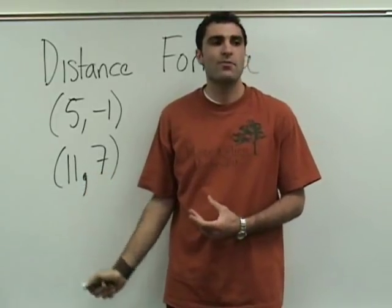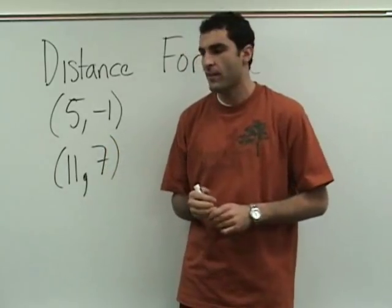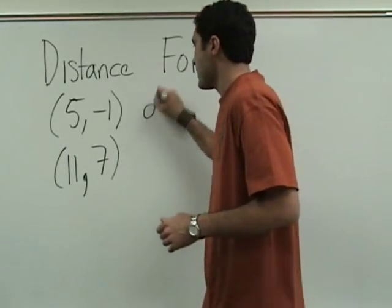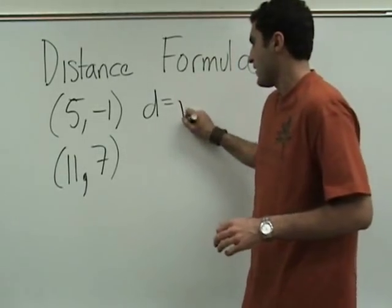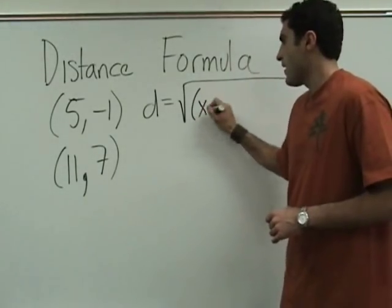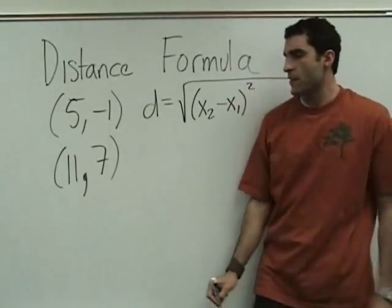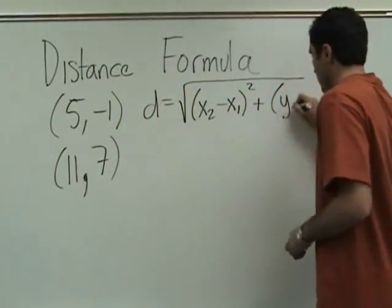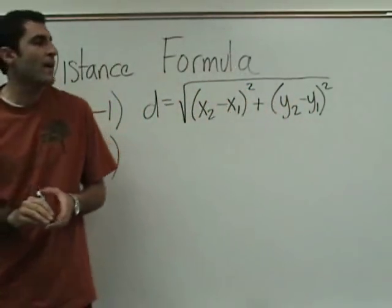What is the distance between these two points? We could graph it and do all kinds of different ways to find the distance. But there's a formula to find the distance between. The formula goes like this: D equals — D stands for distance — a long square root sign. X2 minus x1 squared plus y2 minus y1 squared.